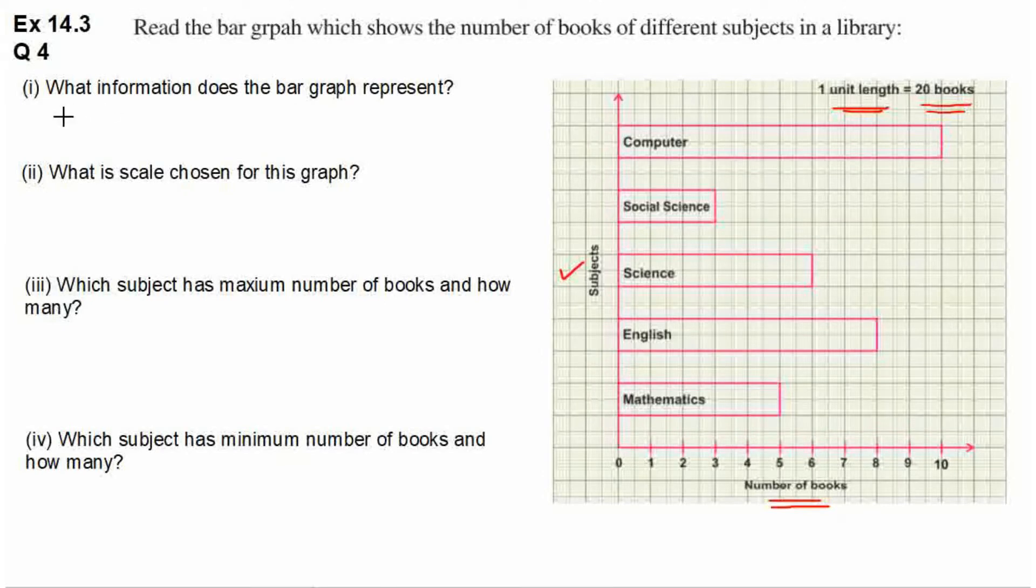First question is, what information does the bar graph represent? So, in this bar graph, what information represents? Number of books of different subjects in a library. So, this is the answer to this question. Number of books of different subjects in a library.